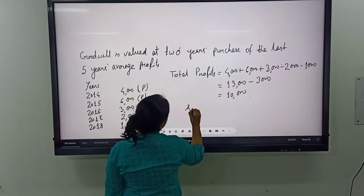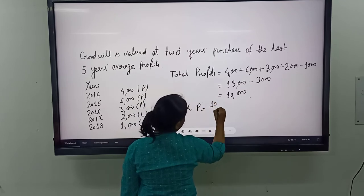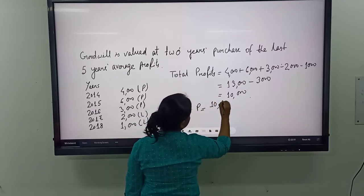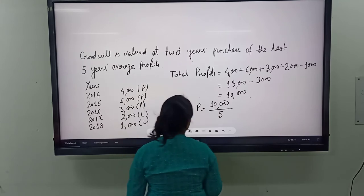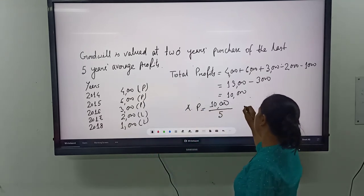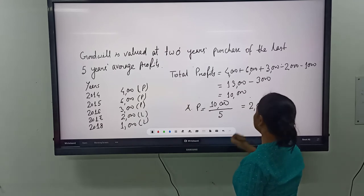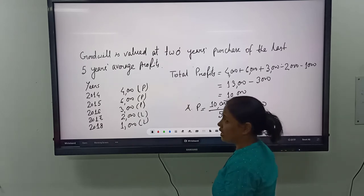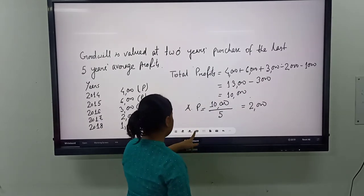Now we can find out our average profit. Average profit is equal to total profit divided by number of years, that is 10,000 divided by 5, which equals 2000. So our average profit is 2000.